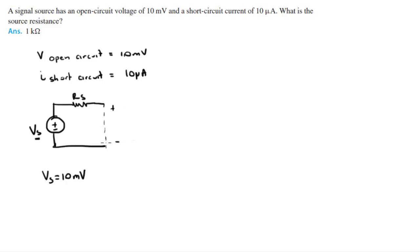And they tell you that if you short this out, the short circuit current passing through here will be 10 picoamps, which means that the current passing through will be given by Ohm's law, which is V equals I times R. So VS equals 10 picoamps times RS.